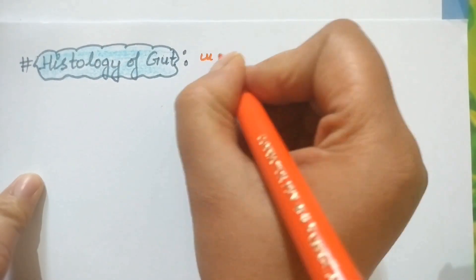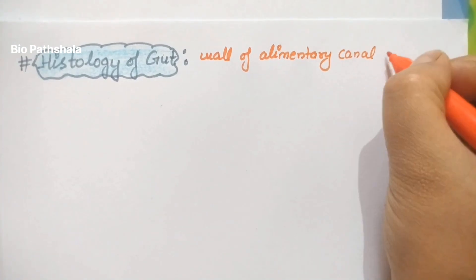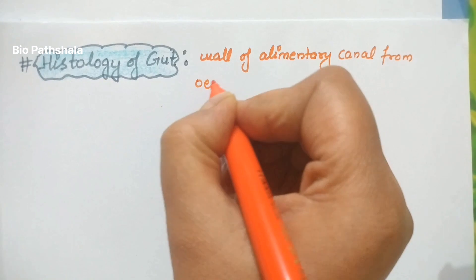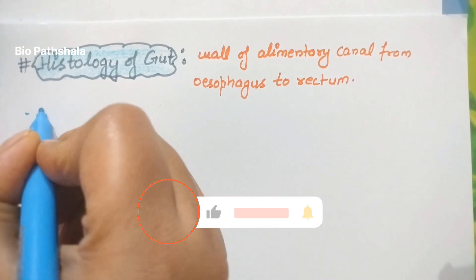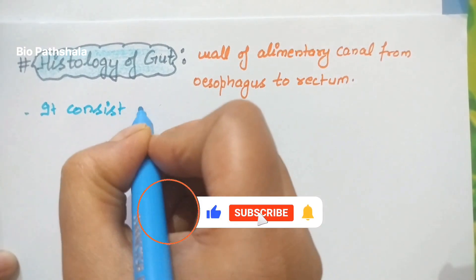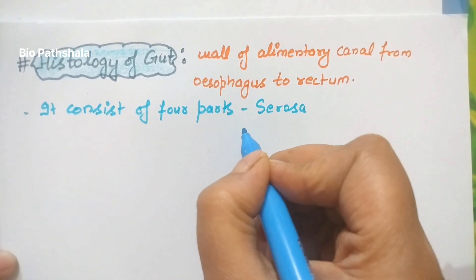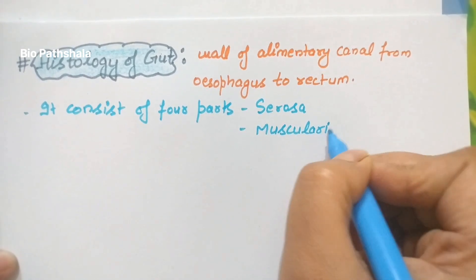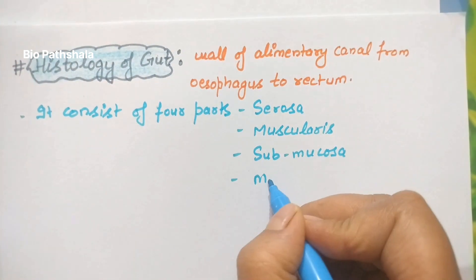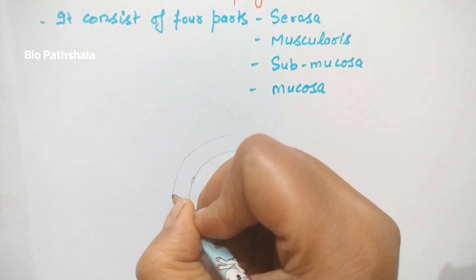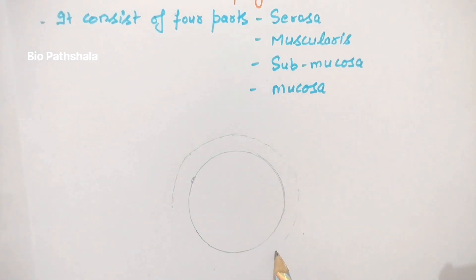Now the next topic is histology of gut. Gut means alimentary canal, gastrointestinal tract, and we will see the histology of it in detail — how many layers or parts it has. The gut starts from esophagus to rectum and it consists of four parts: serosa, muscularis, submucosa, and the innermost is mucosa. We will see this diagrammatically.